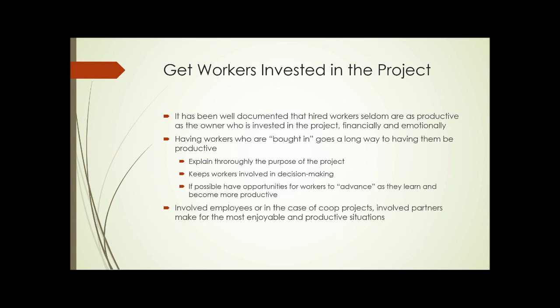How do you do that? There are three main ways. One: the employees should know what's going on. Explain what the purpose of the project is. If it's to make money in urban agriculture, they need to know that. If it's to provide an educational opportunity, they need to know that. The workers need to know exactly what's going on — therefore, it's easier to explain exactly what's expected of them.